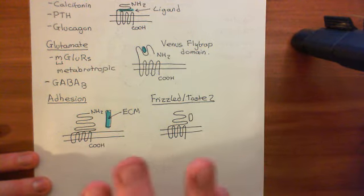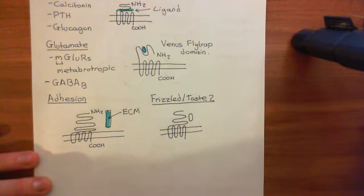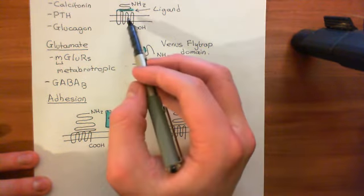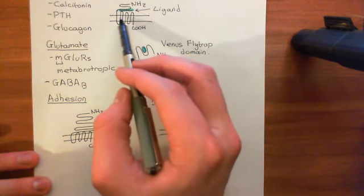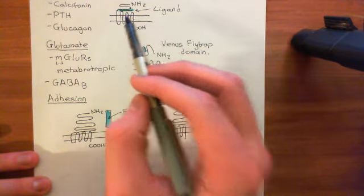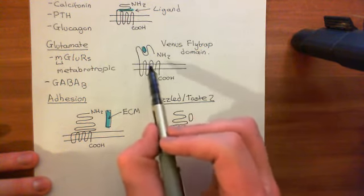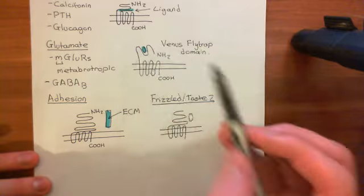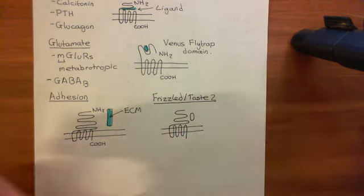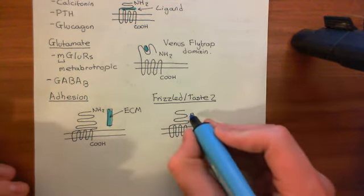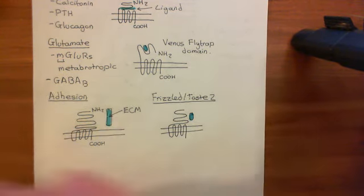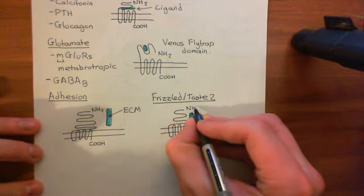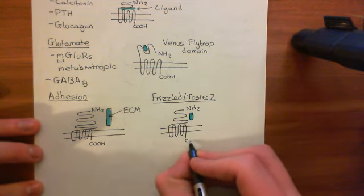You can't categorize it into the rhodopsin family because the ligand is bound by the amino terminal domain. You can't categorize it into the secretin family because it isn't lodged in between the amino terminal domain and the seven transmembrane portion. And you can't categorize it into the glutamate receptor family because it doesn't have the venus flytrap domain. So this family covers G-protein coupled receptors which bind their ligand in the amino terminal domain but don't have any other distinguishing features.